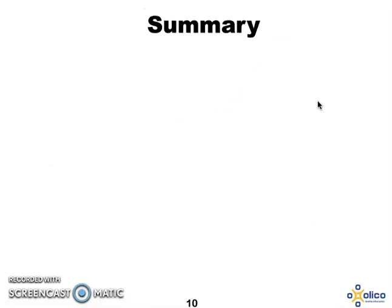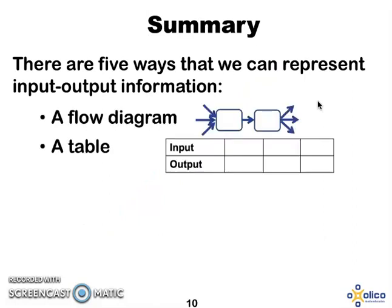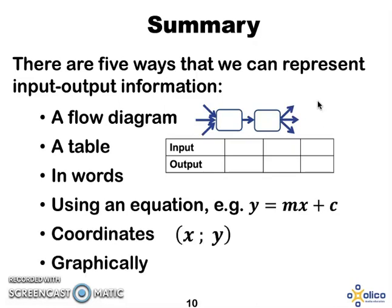So let's summarize what we've learned. Five ways. A flow diagram. A table. Words. An equation. Coordinates. And last but not least, a graph. I hope you've learned something interesting here and enjoyed it.